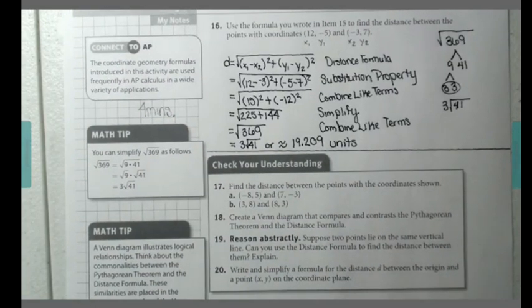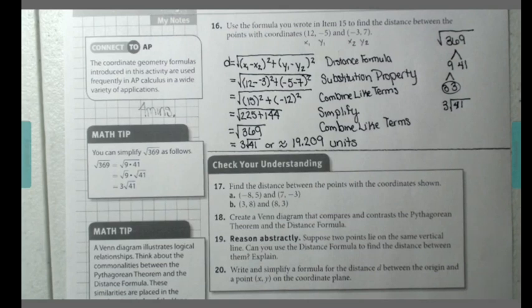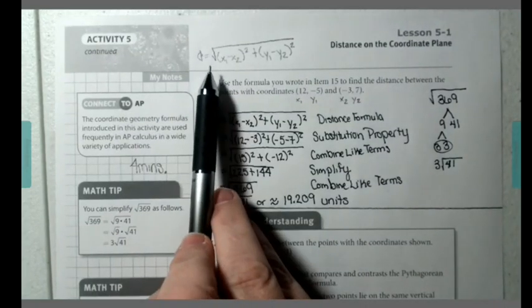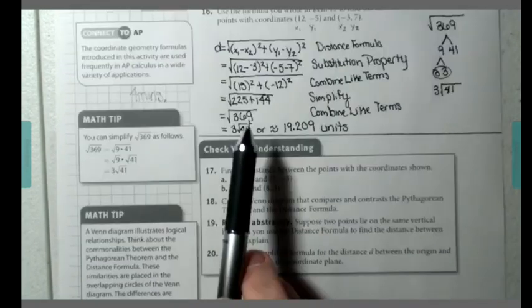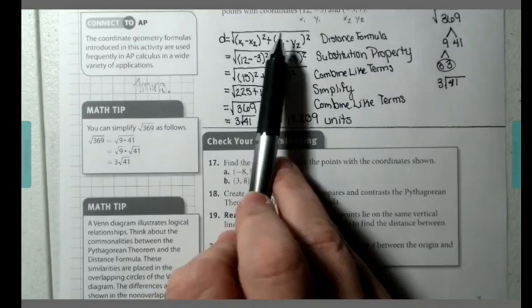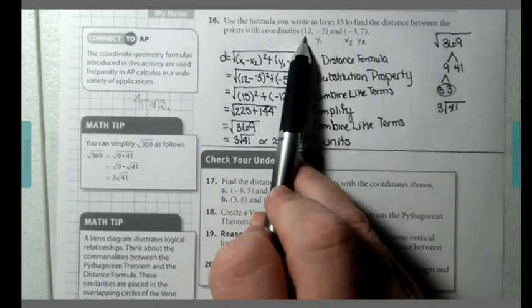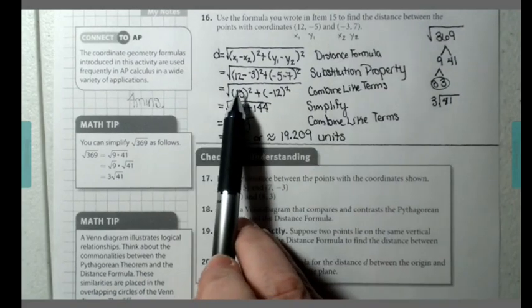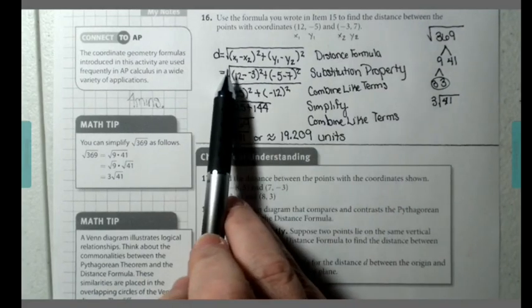Here I have now walked through question number 16. I first wrote down the distance formula, which I brought over from question 15. I then substituted my values for x1, y1, x2, y2. I combined like terms, so I simplified my parentheses.